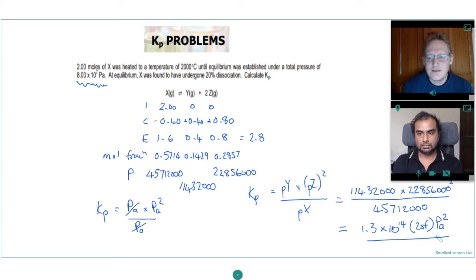So our answer is 1.3 times 10 to the 14 pascal squared. And there we've calculated Kp. Great.